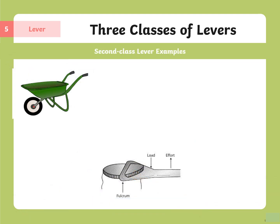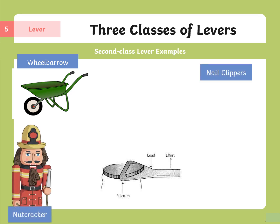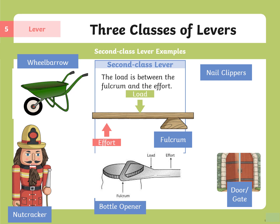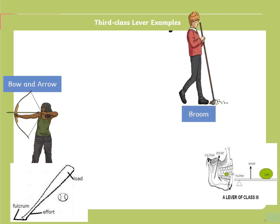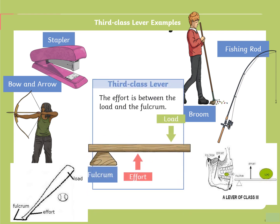Examples of second-class levers include wheelbarrow, nutcracker, nail clipper, bottle opener, and door gate — in all cases the load is between the effort and fulcrum. Examples of third-class levers include a broom, bow and arrow, human jaw, baseball bat, fishing rod, and stapler — in all cases the effort is between the load and the fulcrum.